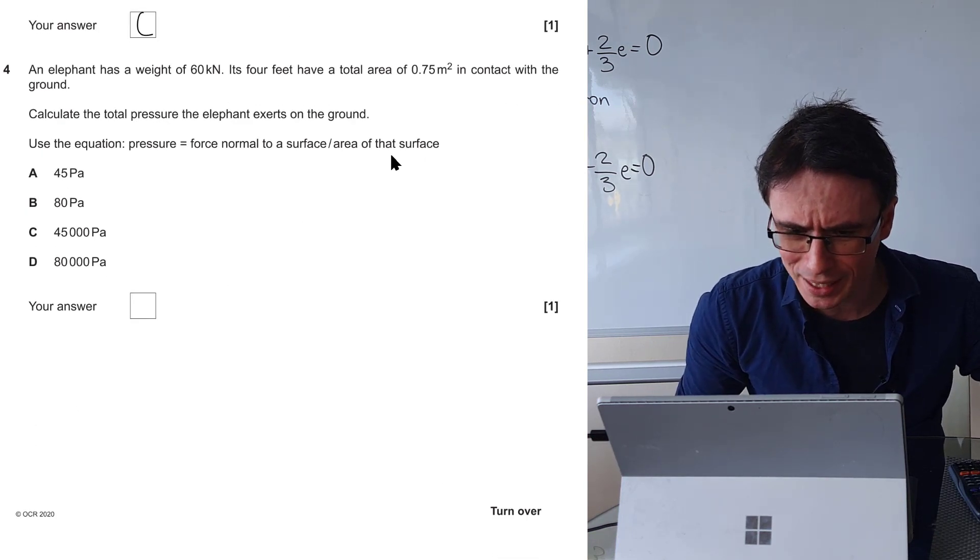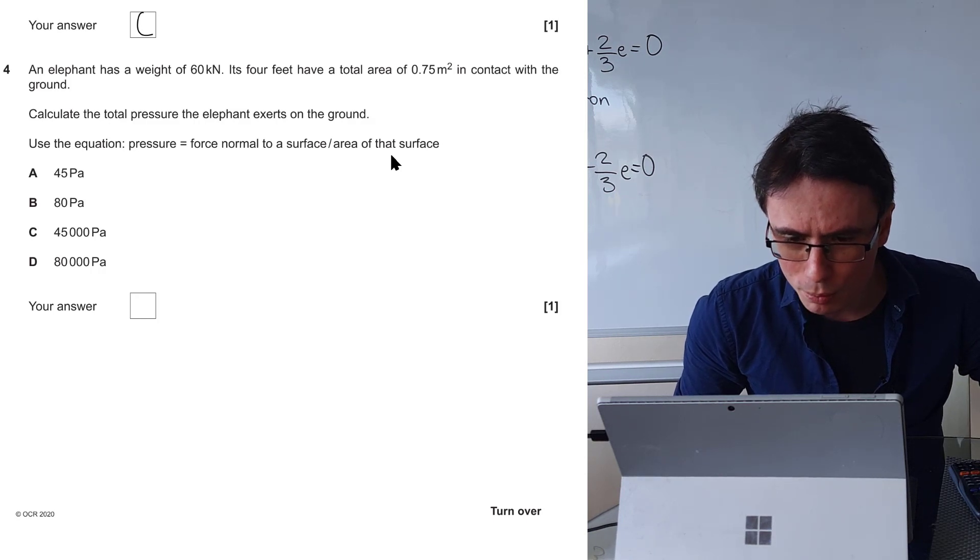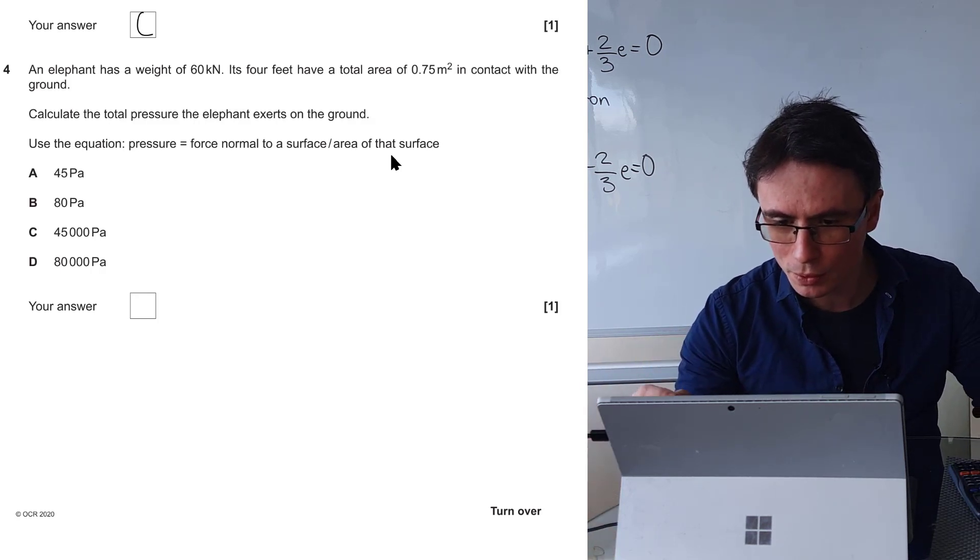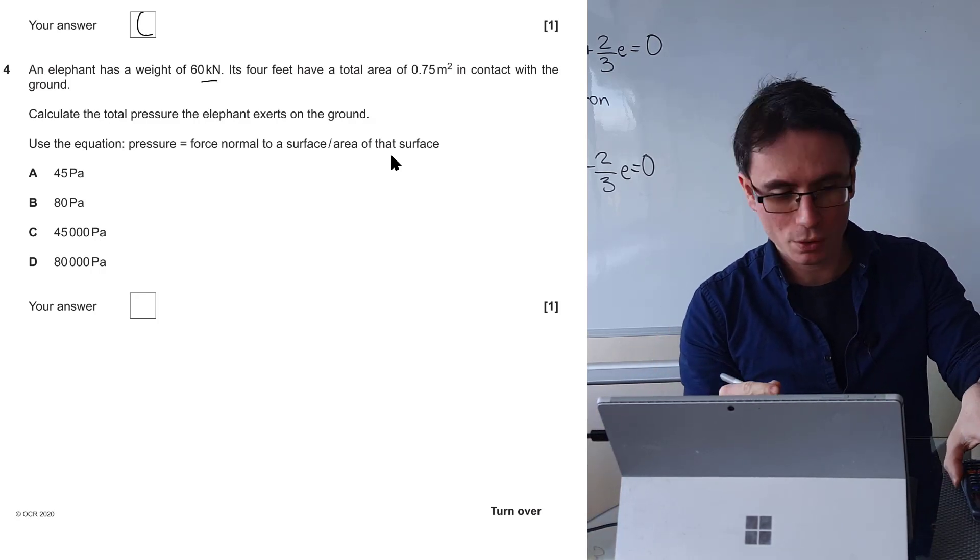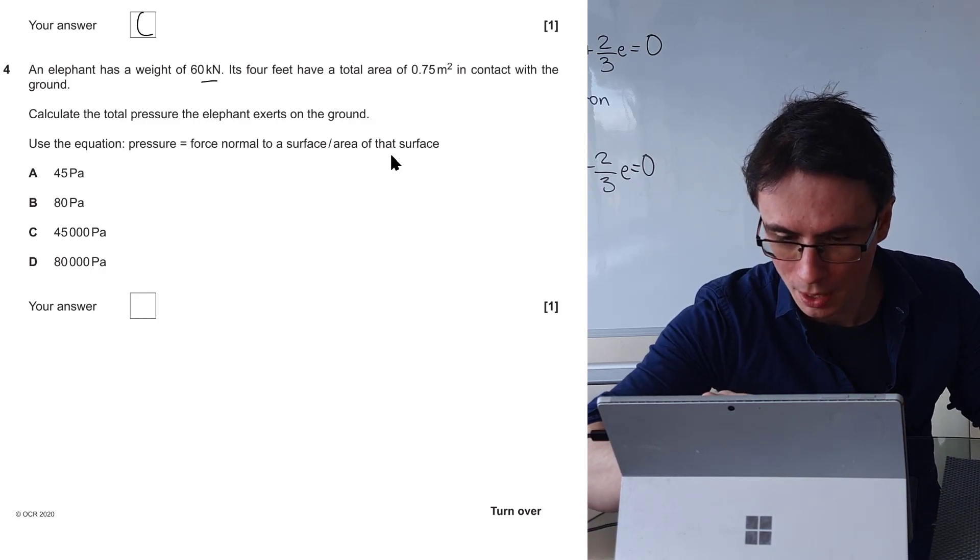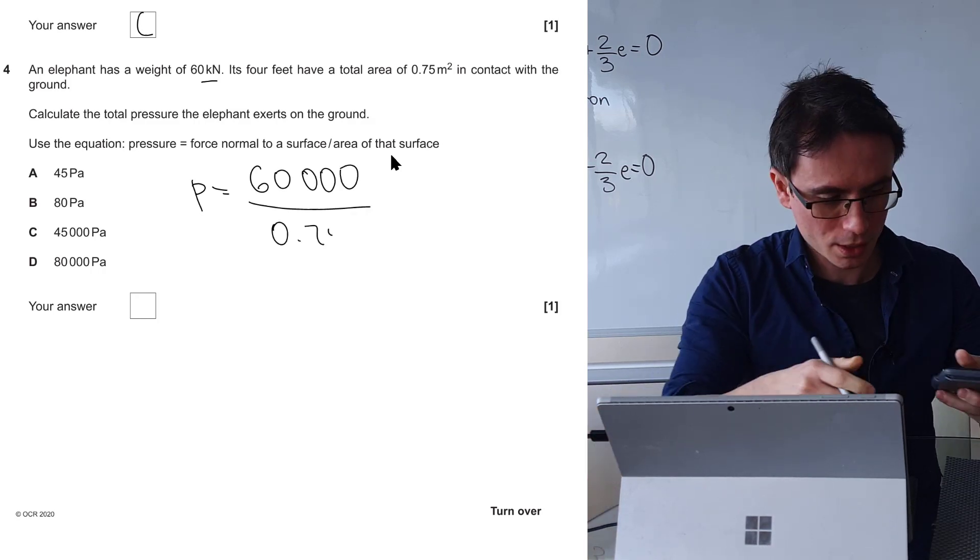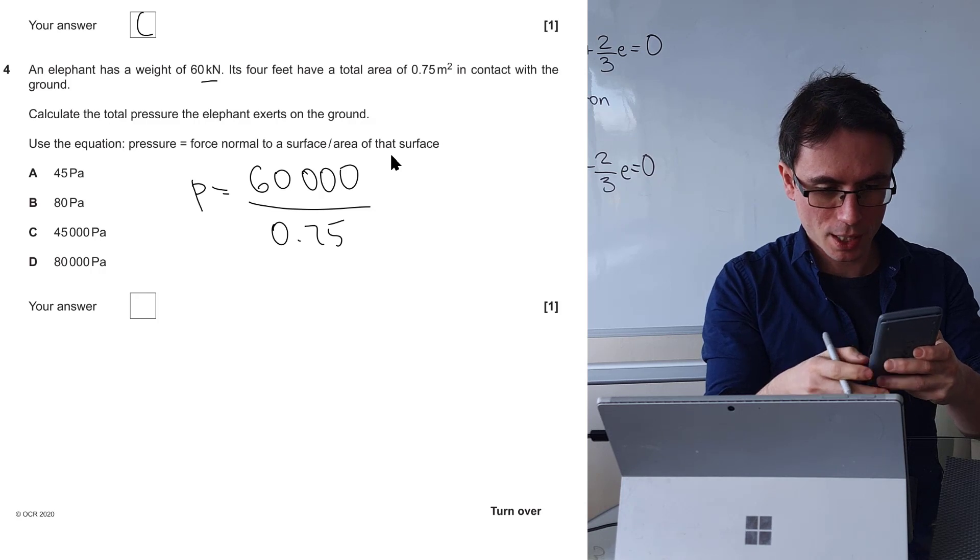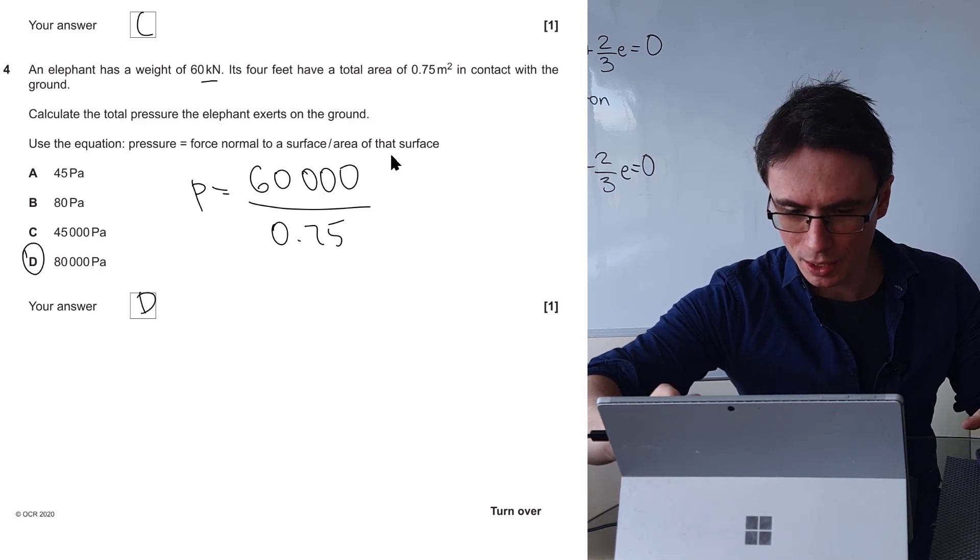We have an elephant which has a weight of 60 kilonewtons. Its 4 feet have a total area of 0.75 square meters in contact with the ground. Calculate the total pressure the elephant exerts on the ground. Pressure is force normal to a surface divided by the area of that surface. I'm just going to be quite careful to convert the kilonewtons to newtons. Our pressure will be equal to 60,000 divided by 0.75.